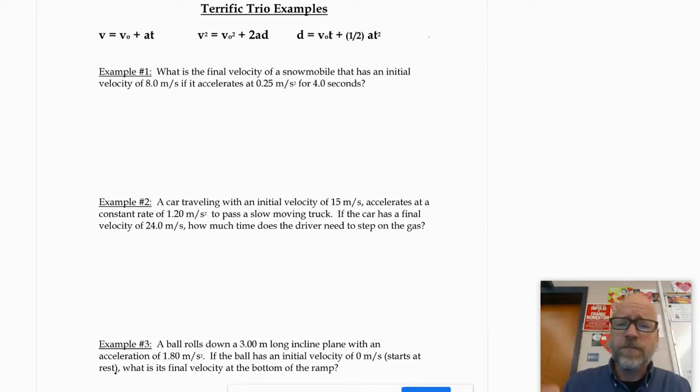Number one says, what is the final velocity of a snowmobile that has an initial velocity of 8 meters per second if it accelerates at 0.25 meters per second squared for 4 seconds? Well, what do you think? Okay. Now, hold on. Some of you are already starting. Relax. Now, would you go ahead and answer that in your head? Go ahead. Do it. Wait. Okay. Good. What did you get for an answer? That's right. It is 9. Nice job.